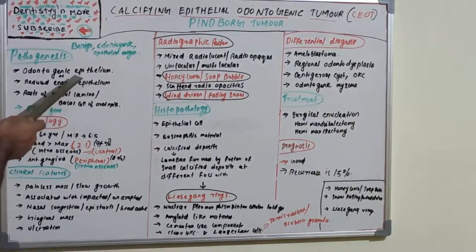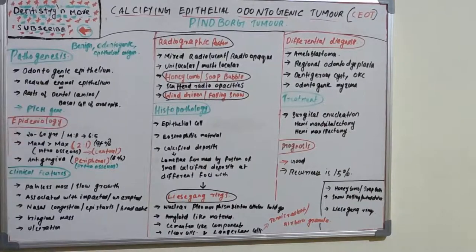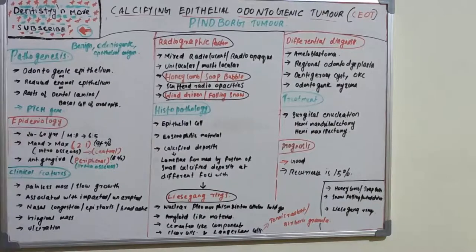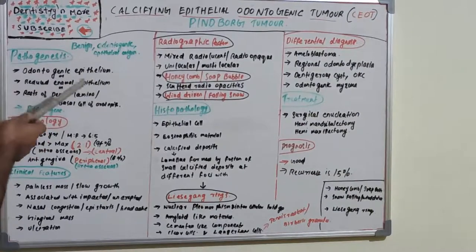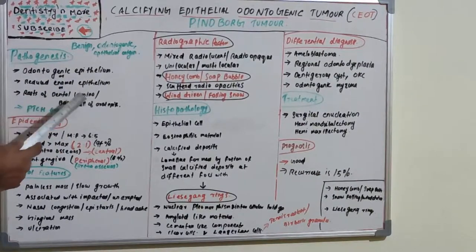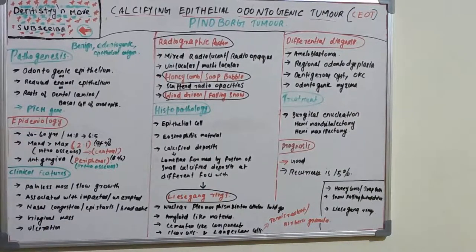According to various authors, Pindborg himself said it originated from odontogenic epithelium; others said it is from reduced enamel epithelium of a closely related unerupted tooth; and some suggest it arises from rests of dental lamina or from basal cells of oral epithelium. So the origin has various theories — odontogenic epithelium, reduced enamel epithelium of an unerupted tooth, rests of dental lamina, or basal cells of oral epithelium.